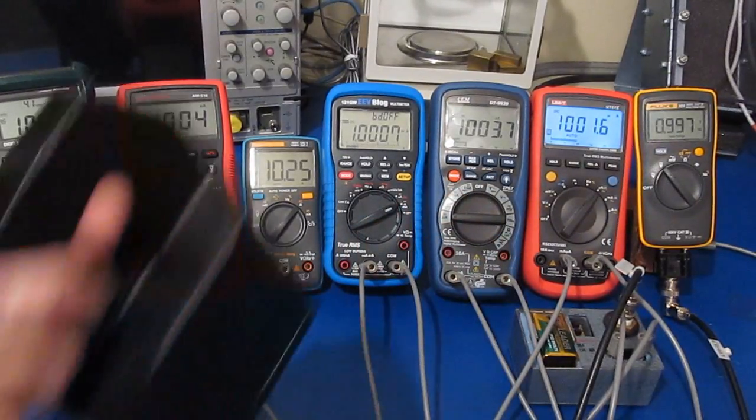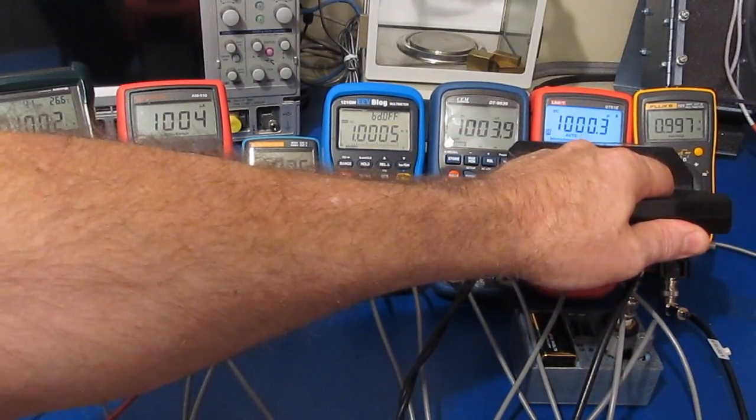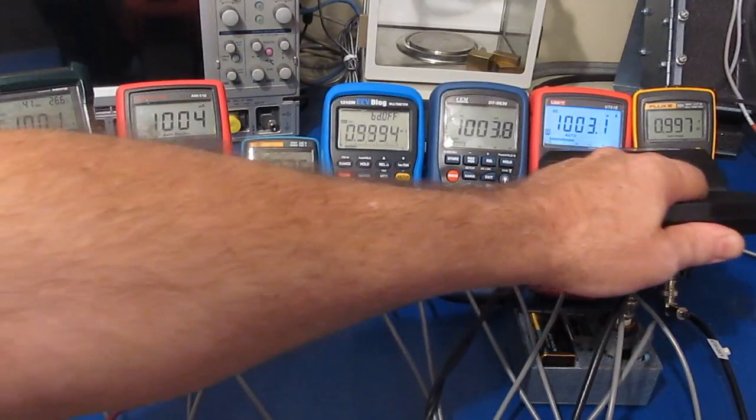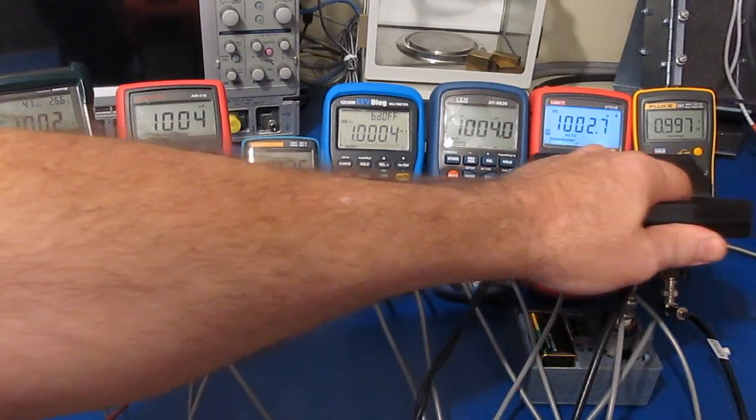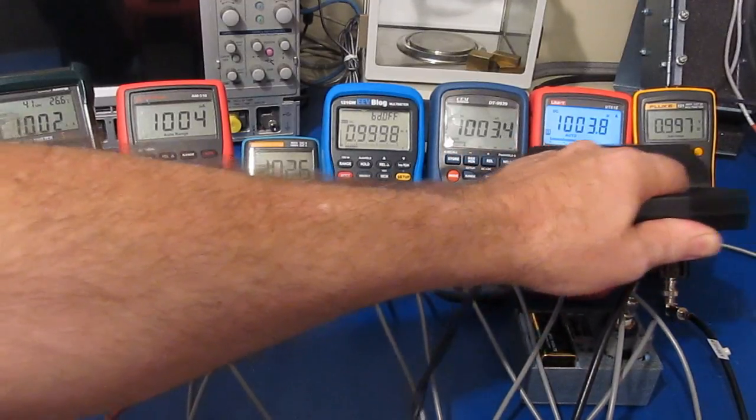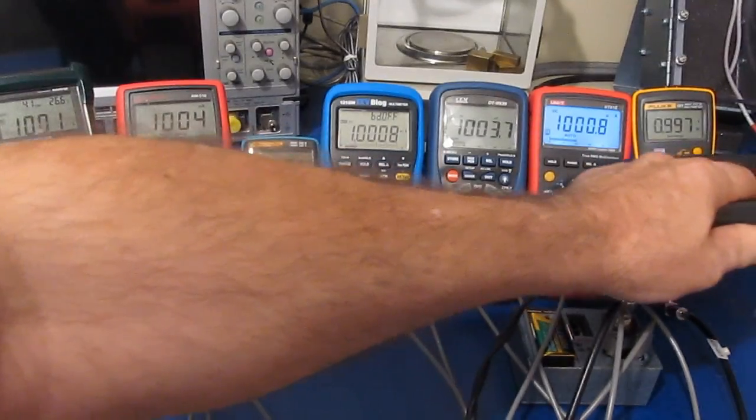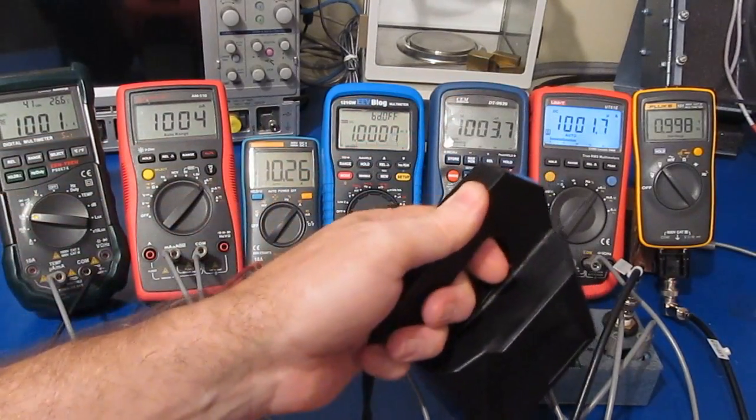Let's try our highly modified UT61. Getting a little bit of effect. I would think it would be a lot worse than what it is with all those mods in there. Of course, the 101 is not affected. Let's try our little shunt.